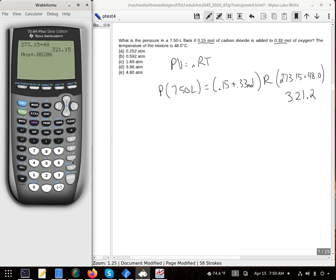Also multiply it by the 0.15 plus 0.33 and then divide this by 7.5 and I get a pressure of 1.686 atmospheres or 1.69.